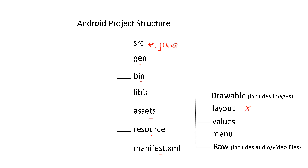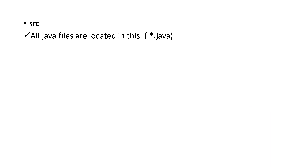When we create an XML file, it is stored in the layout folder within the resource folder. All XML files are stored in the layout resource. All Java files are located in the SRC folder.